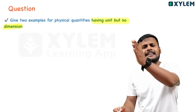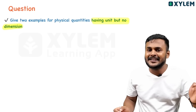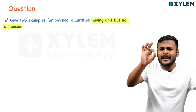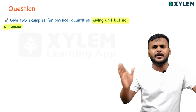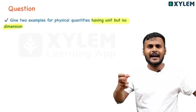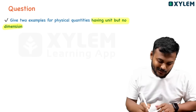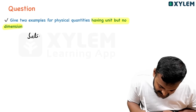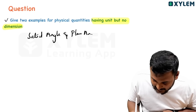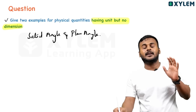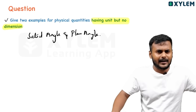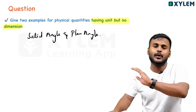Unit but not dimension. The answer is solid angle and plane angle. Solid angle and plane angle have units — plane angle's unit is radian — but they are not dimensions. So solid angle and plane angle: unit exists, dimension does not.